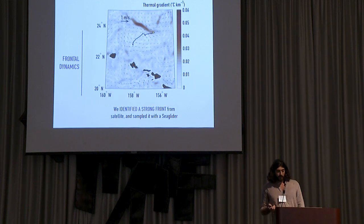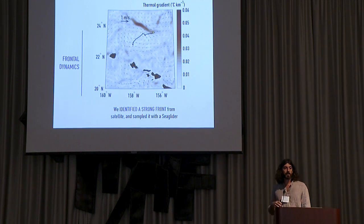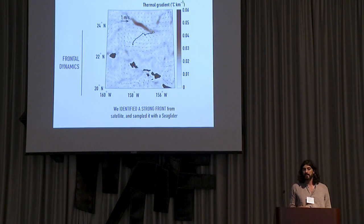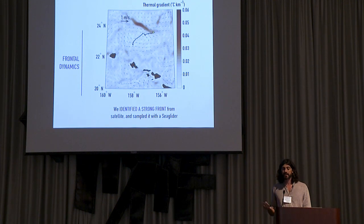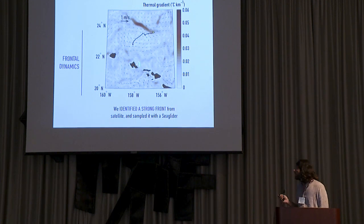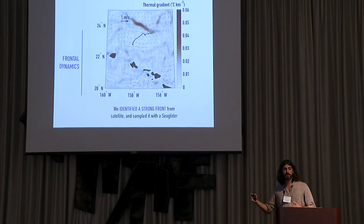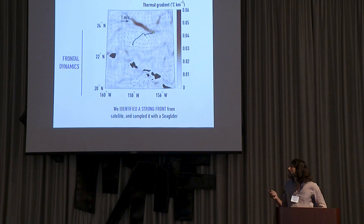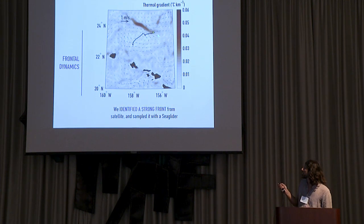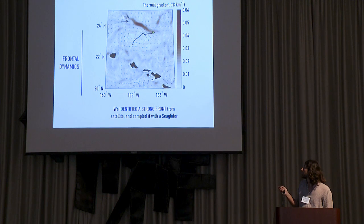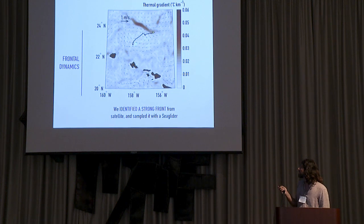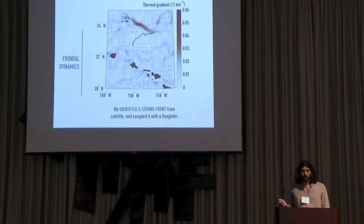The third example is about exploring fronts, the submesoscale frontal dynamics. We can identify fronts with different proxies from satellite. One proxy is to look at thermal gradients, how much temperature changes over space at the sea surface. In 2017, we saw this big and strong front. We had a glider in the water and we said, let's try to cross it. That's the trajectory of the glider that did this crossing. It's very interesting what we saw.